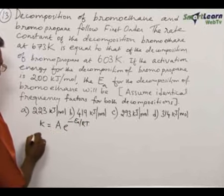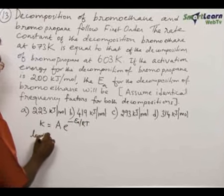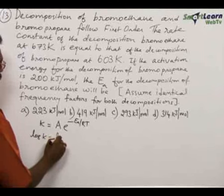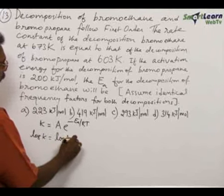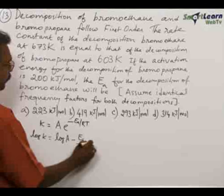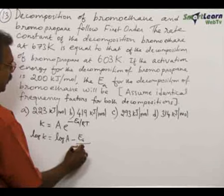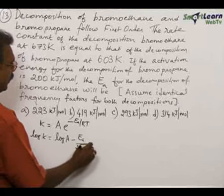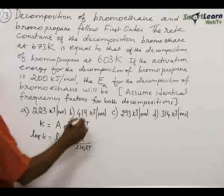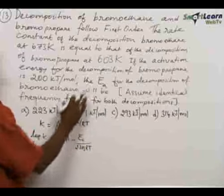In logarithmic form we can write log k equals log A minus Ea by 2.303 RT. And here as per the problem, the rate constants are equal.